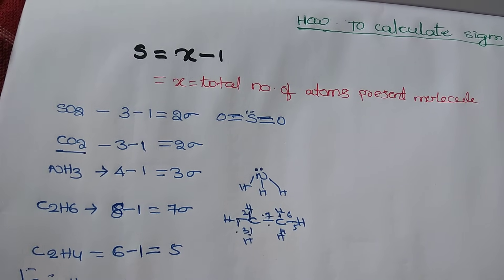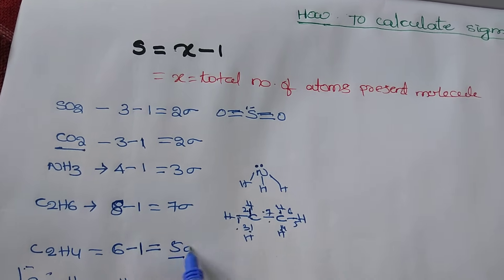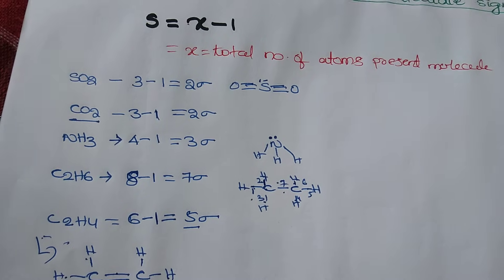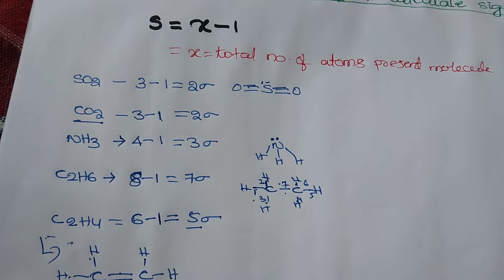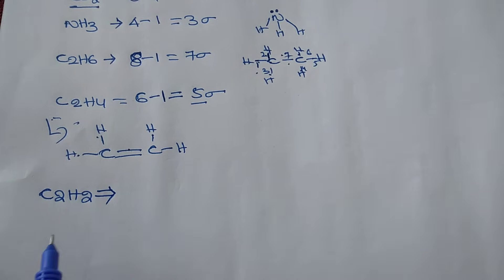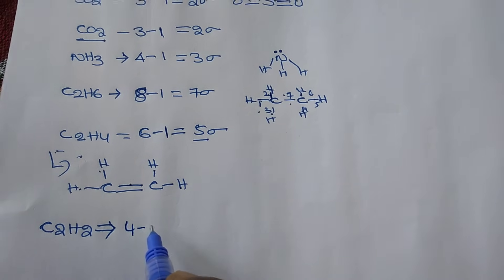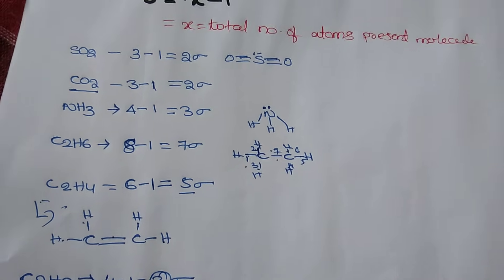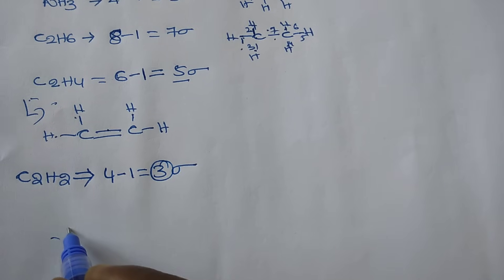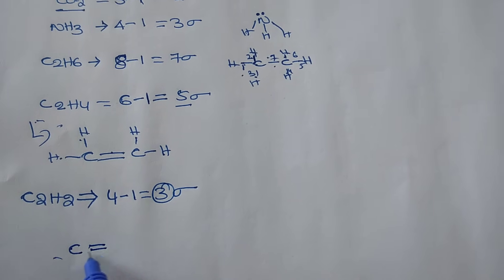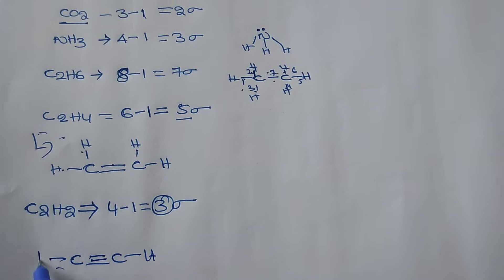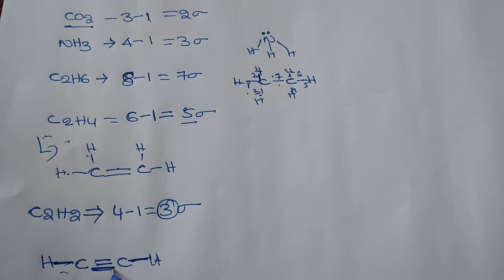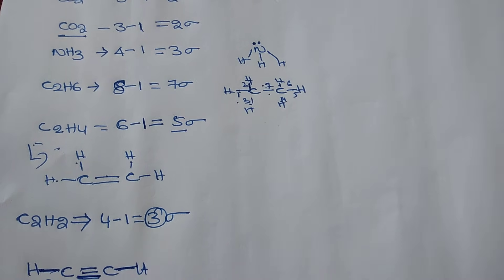Drawing the structure confirms: one, two, three, four, five — five sigma bonds. Next, C₂H₂. How many sigma bonds are in C₂H₂? There are four atoms total. Four minus one equals three sigma bonds. Let us confirm with the structure: one sigma bond, second one, third one — three sigma bonds total.